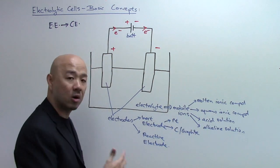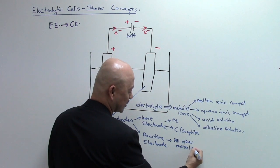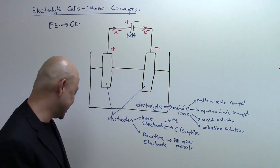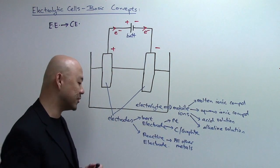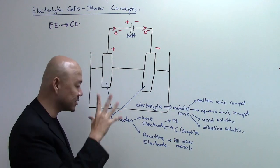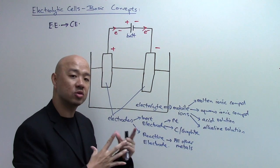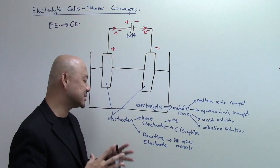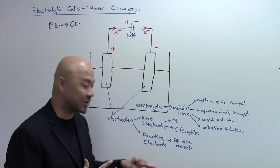Reactive electrodes are all other metals — we tend to put them under reactive electrodes. For this video, we'll keep things simple and use inert electrodes, because an inert electrode does not get involved or take part in the chemical redox reaction. It just acts as a solid surface or support for electron transfer. A reactive electrode is trickier because the electrode itself will also get oxidized and take part in the redox reaction, so I'll skip that for now.